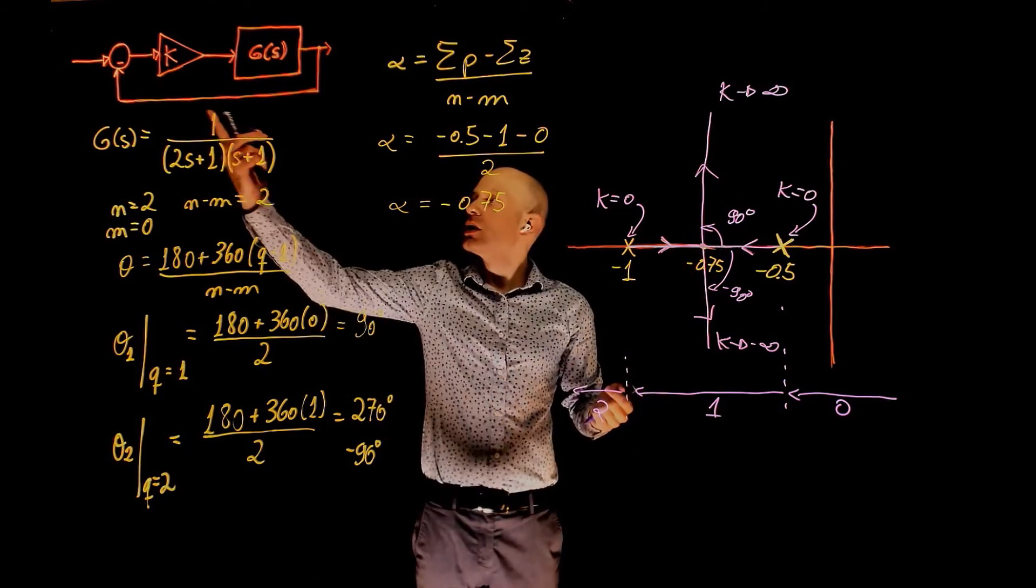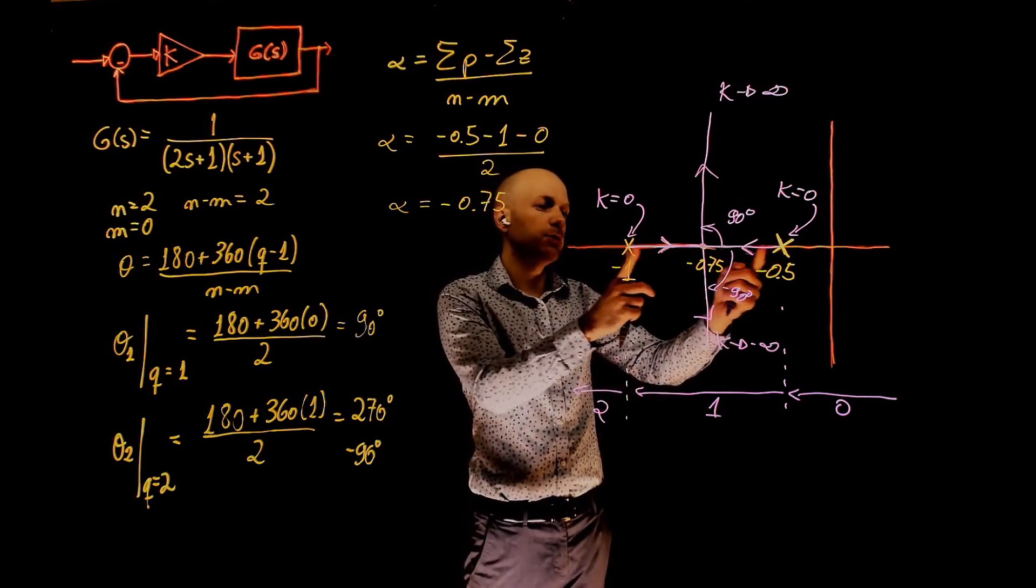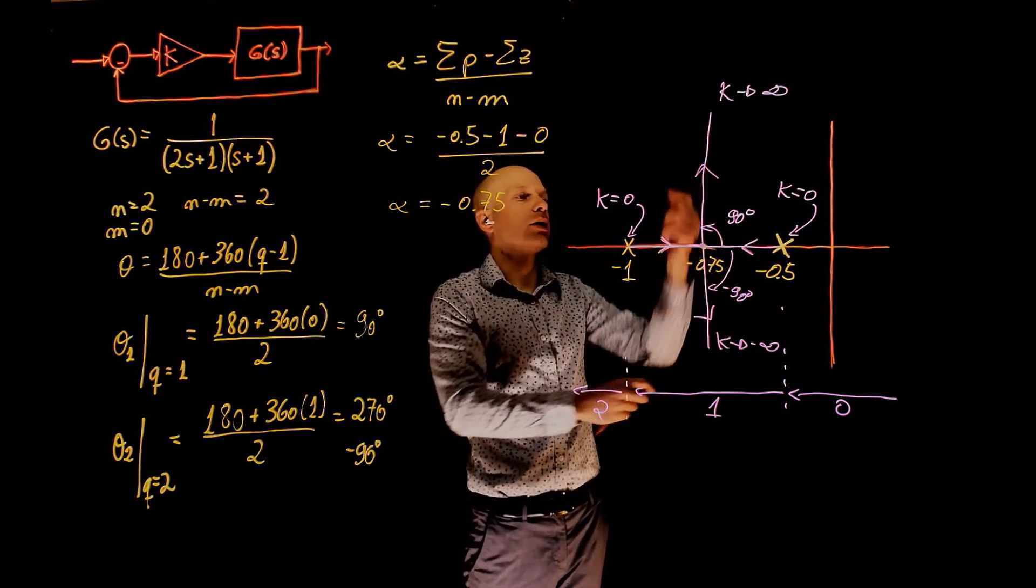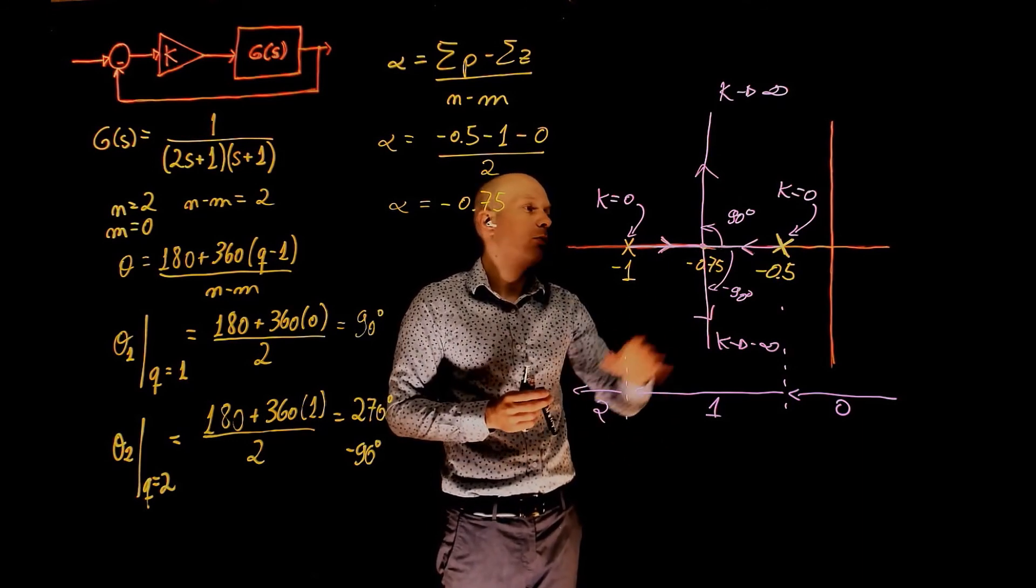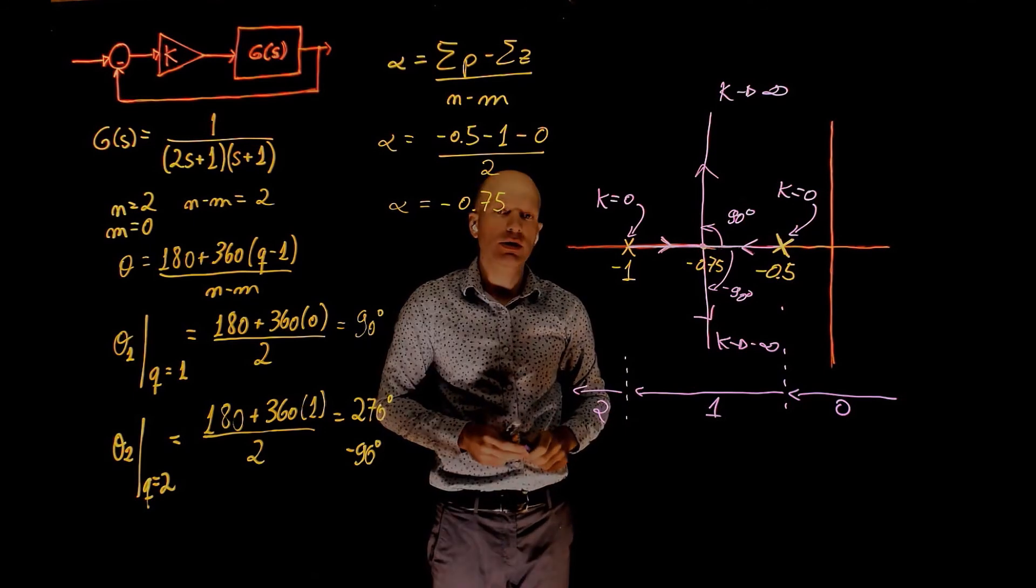So as we increase k, we can see that we go from an over-damped system to a critically damped system and then an under-damped system. The good news is the system is always stable. We are never crossing into the unstable region of the s-plane.